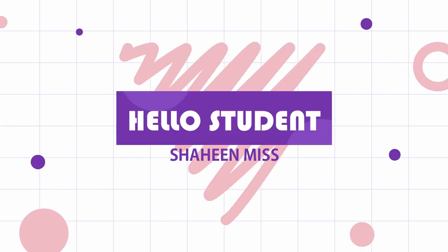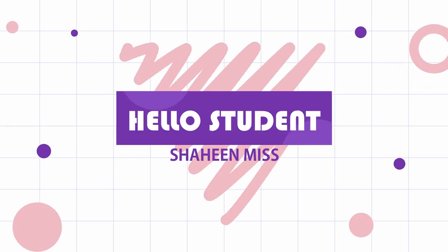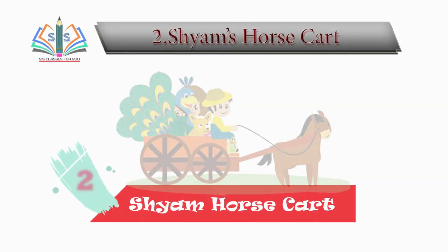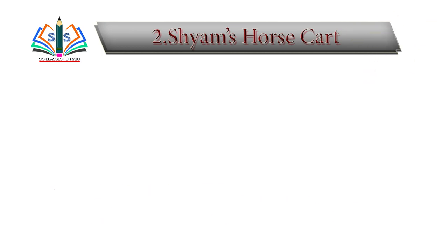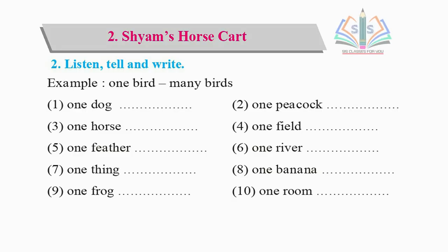Hello students, I am Shahin. Today we are learning Sham's Horse Cart, second listen. Tell and write: one bird, many birds, one dog, many dogs. One کا مطلب ہوتا ہے ایک - ایک dog، ایک کتا۔ Many dogs بہت۔